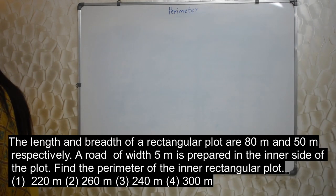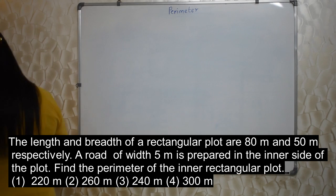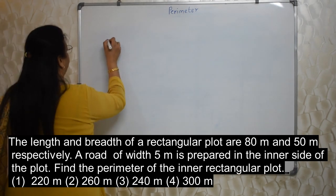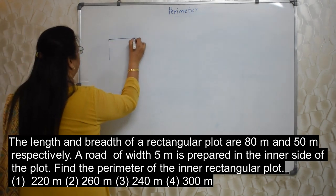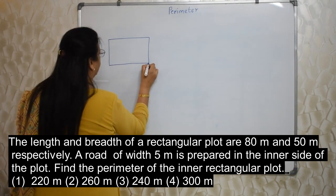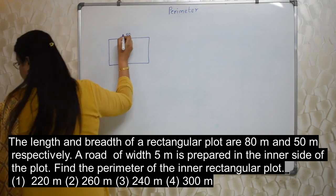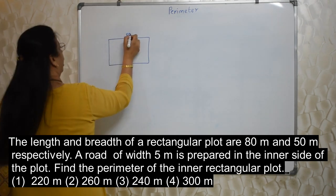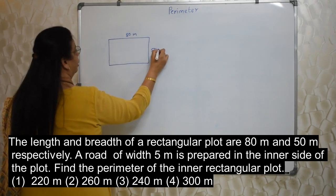The length and the breadth of a rectangular plot are 80 metre and 50 metre respectively. A road of width 5 metre is prepared in the inner side of the plot. Find the perimeter of the inner rectangular plot. See, there is one rectangular plot. Very nice sum. This is a rectangle. This is 80 metre and 50 metre. Breadth is 50 metre.